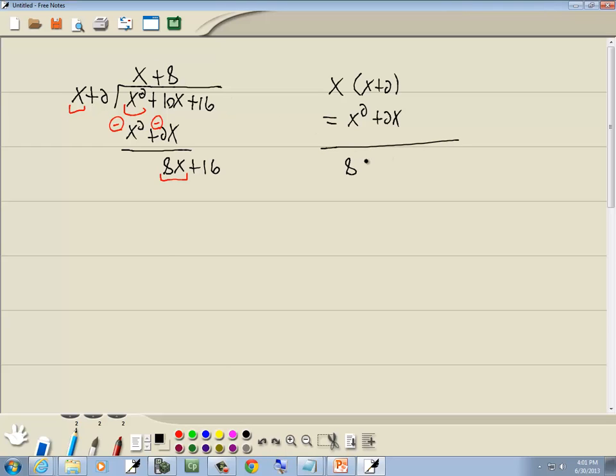Now whatever we put up on top we multiply by what's on front, so I'll take 8 and multiply times x plus 2. 8 times x is 8x, 8 times 2 is 16. So we got 8x plus 16.